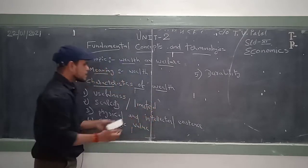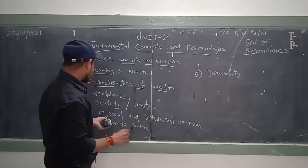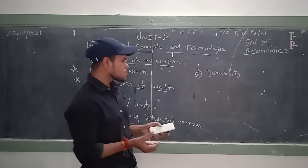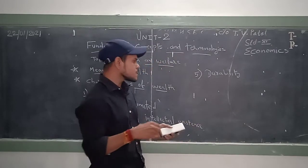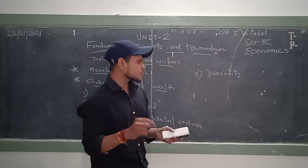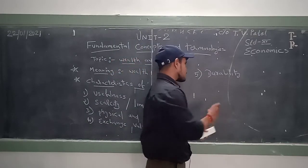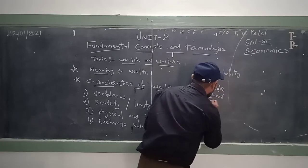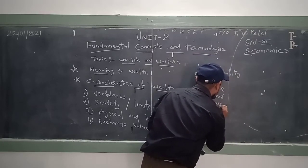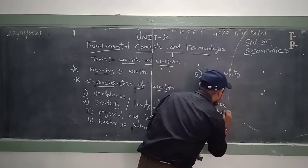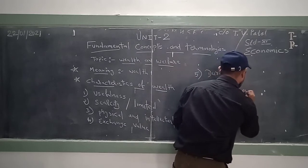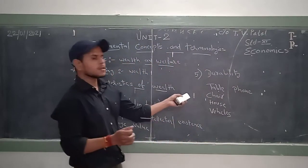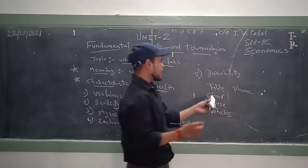The third characteristic of wealth is physical and intellectual existence. Any commodity or product which is physically present is considered as wealth. For example, table, chair, house, vehicles, phone — all these things are physically present in nature.